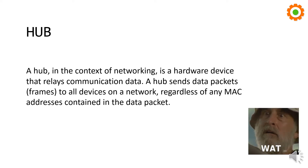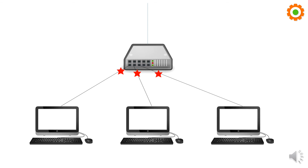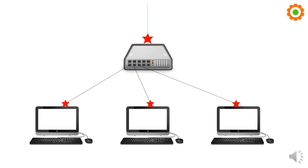Let's understand this with an example. Suppose this is a hub and the other three are nodes connected to the hub on particular ports. When a data packet — represented by a red star — arrives at the hub, the hub directly forwards that data packet to all nodes connected to it. So the hub is simply broadcasting your data.